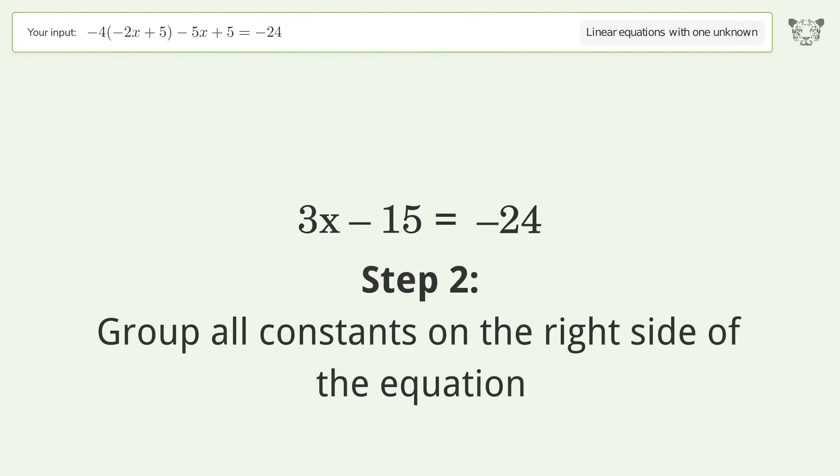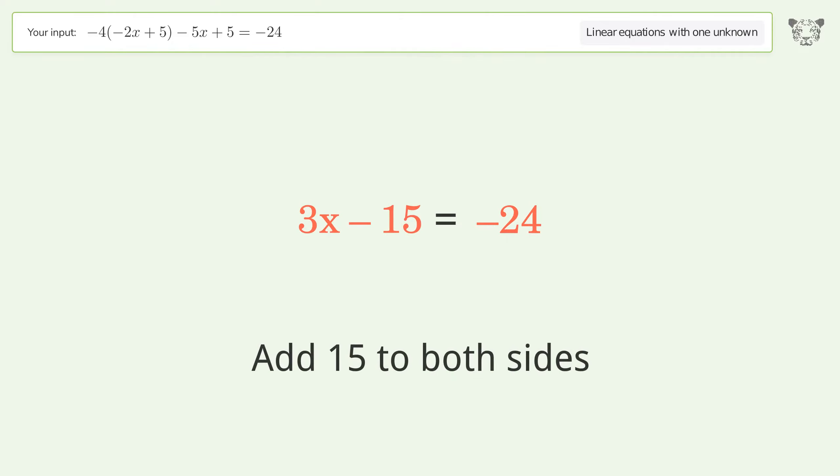Group all constants on the right side of the equation. Add 15 to both sides. Simplify the arithmetic.